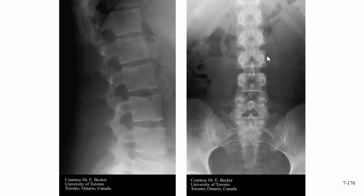Going back to that winking owl: if we see a winking owl, that means one of the pedicles is missing — it looks like it's missing an eye. This is significant because it usually indicates metastatic disease — cancer that has spread to the spine and has replaced bone tissue with tumor tissue. As a habit, the radiologist will check to make sure all the pedicles are present before looking for other abnormalities. By the way, all of this other stuff on the x-ray is gas within the intestines.